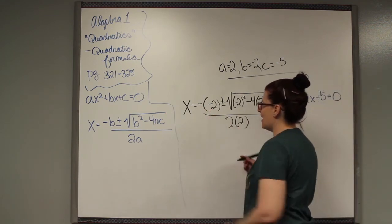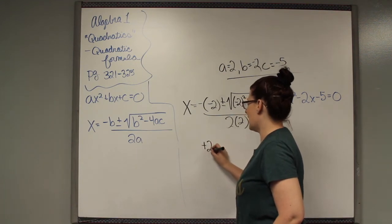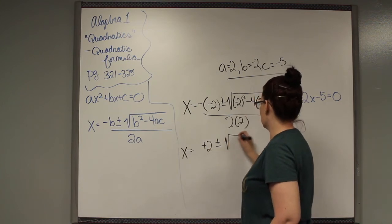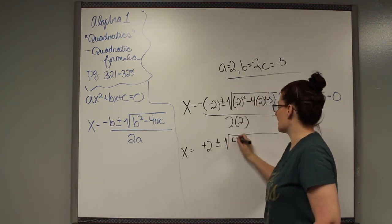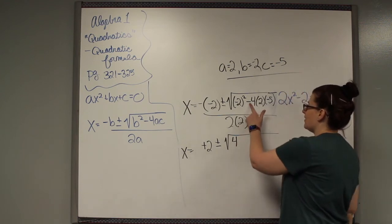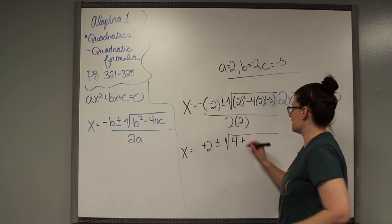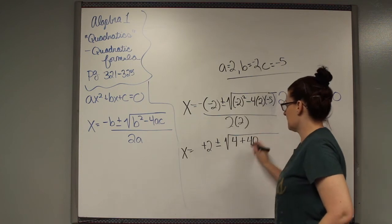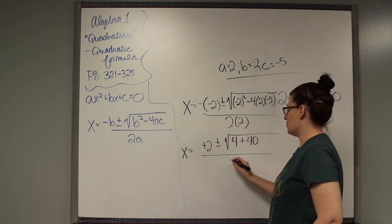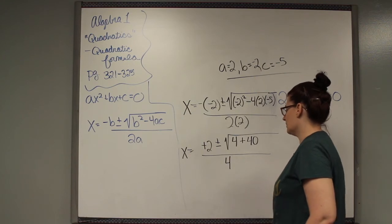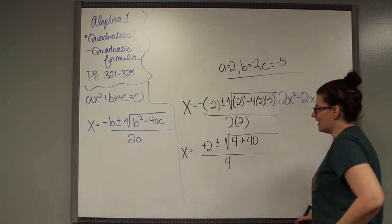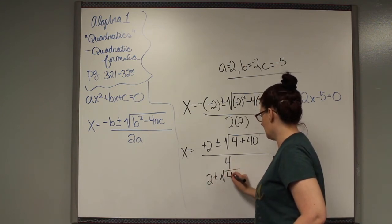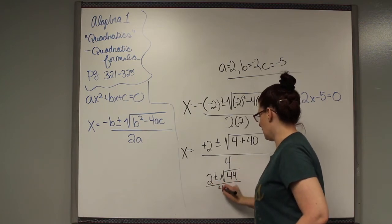A negative times a negative makes a positive 2. Negative 2 times negative 2 is a positive 4. When I look at this, I have a negative and a negative. So this is going to be positive. 4 times 2 is 8, and 8 times 5 is 40. And then 2 times 2 is 4. So now we need to condense that down. It's going to be 2 plus or minus radical 44 over 4.